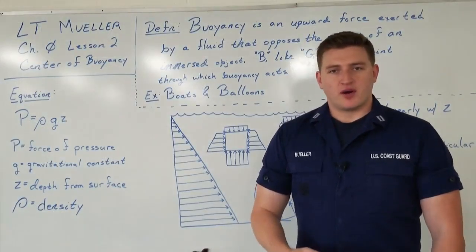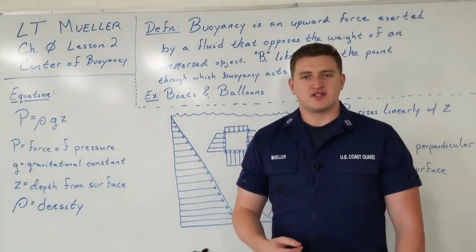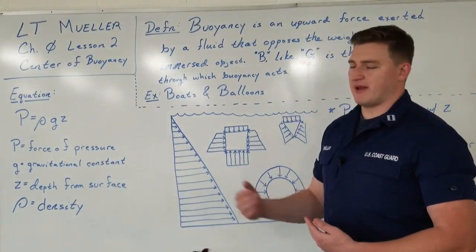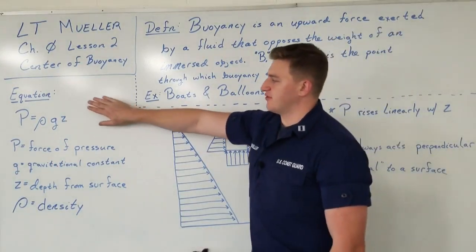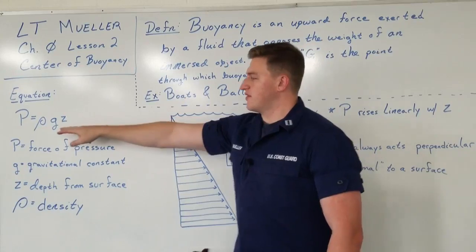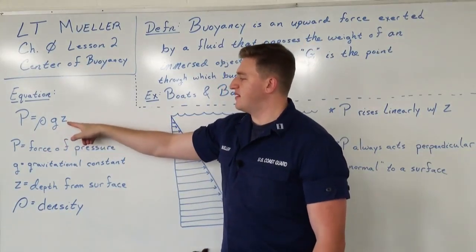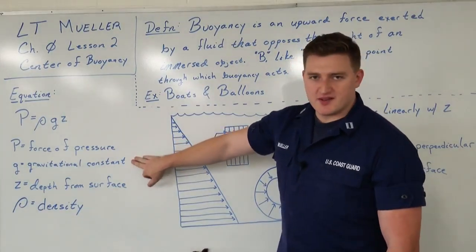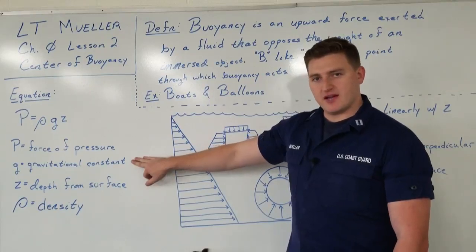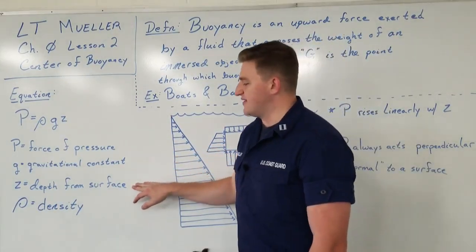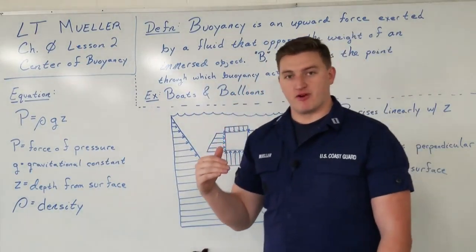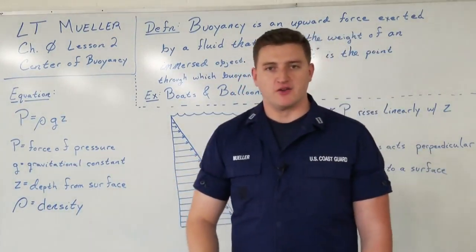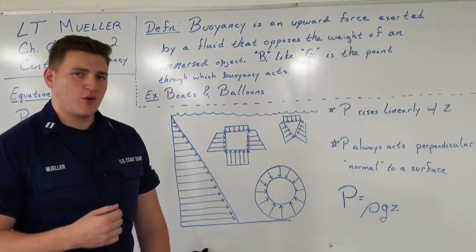Now that we have the definition of buoyancy and center of buoyancy out of the way, we're going to take a look at an equation for pressure. From pressure, we're going to be able to find out the overall force of buoyancy, and then from there, we're going to be able to find out the center of buoyancy. The equation is P equals the Greek letter rho times G times Z. P is the force of pressure. G is the gravitational constant, which for English units will be 32.2, and for metric it will be 9.81. Z is the depth from the surface, or the depth from where the pressure is zero. And rho is density, measured in mass per unit volume, such as kilograms per meters cubed.